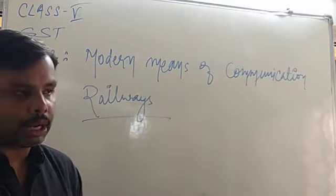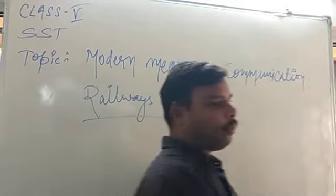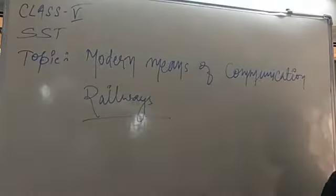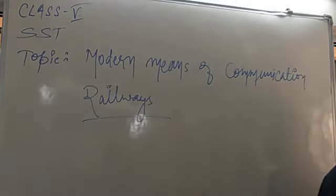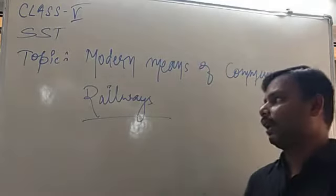What are the modern means of transport? I told you about there are four mediums basically through which the communication or the transporting takes place: roadways, railways, waterways, and airways. We have already covered roadways, we will start with the railways today.